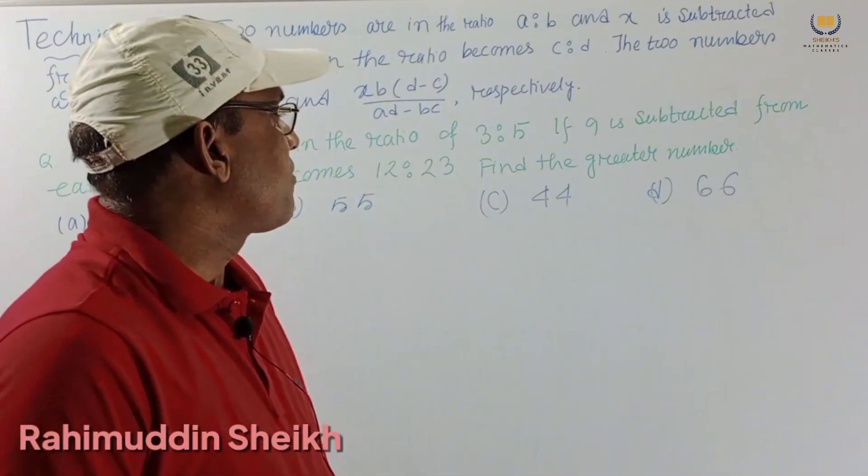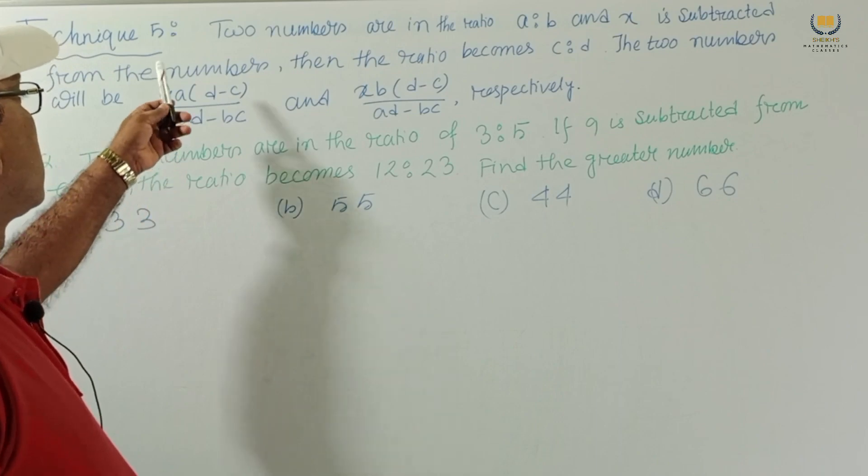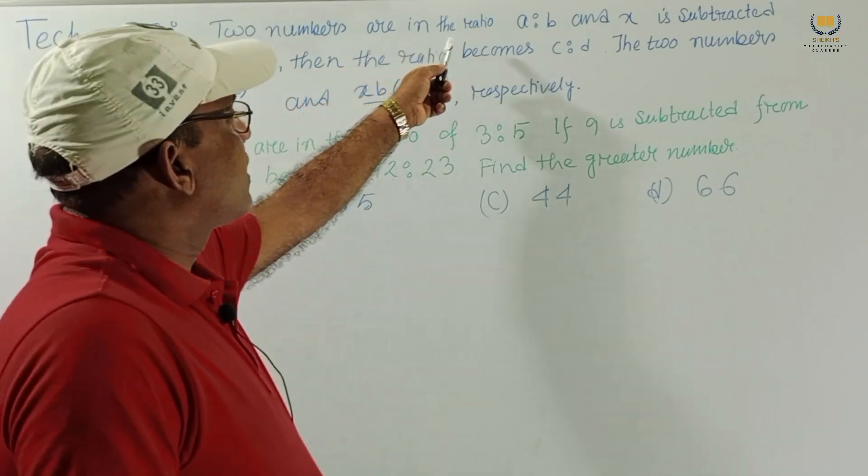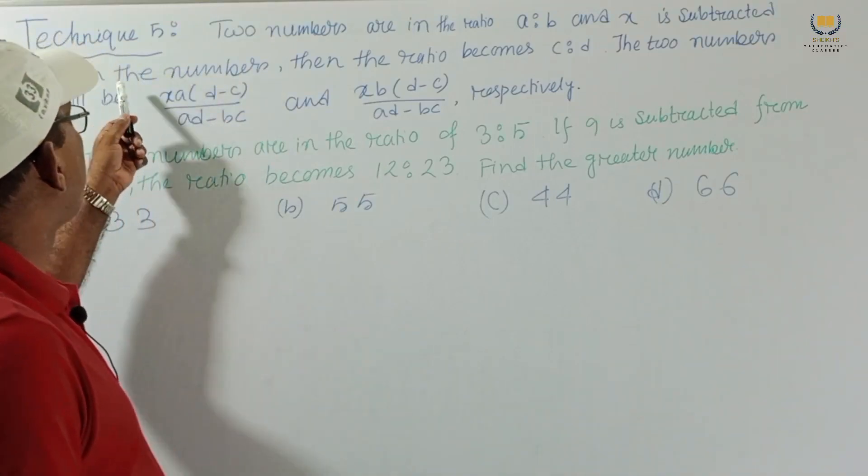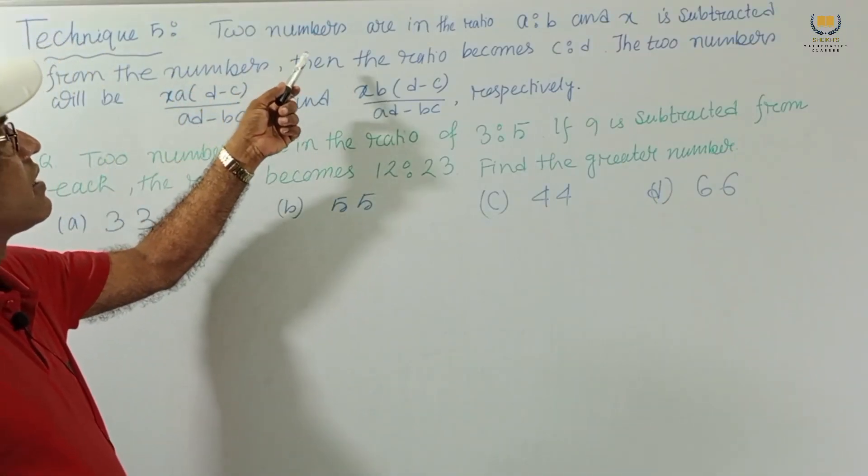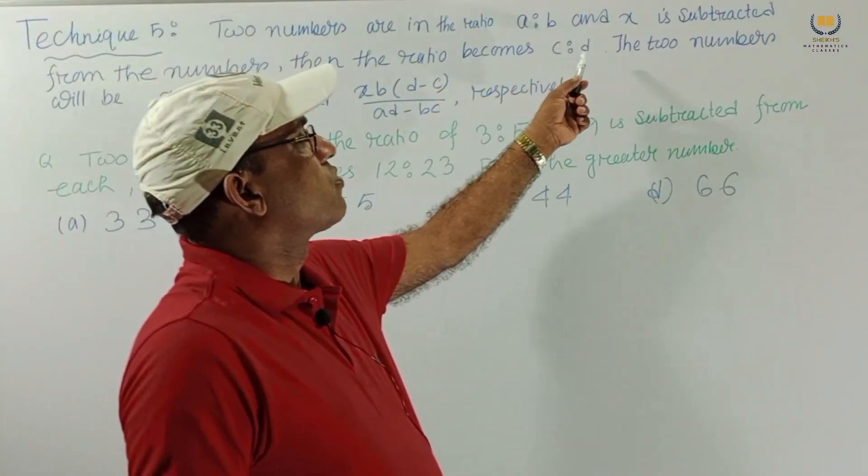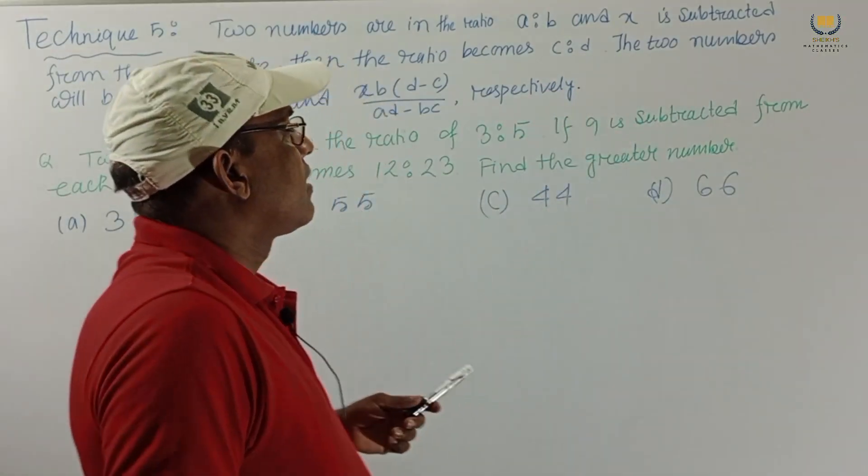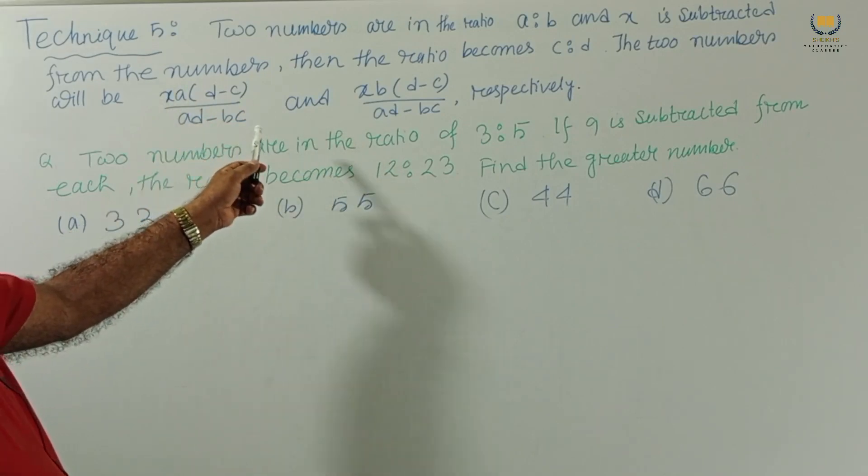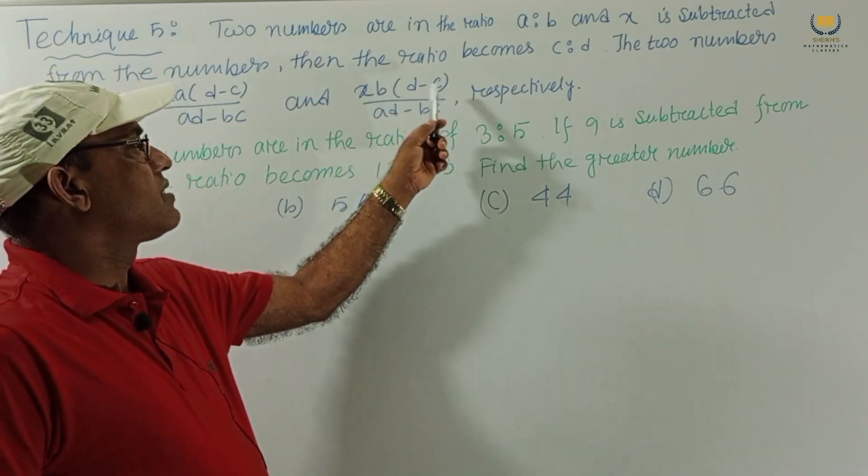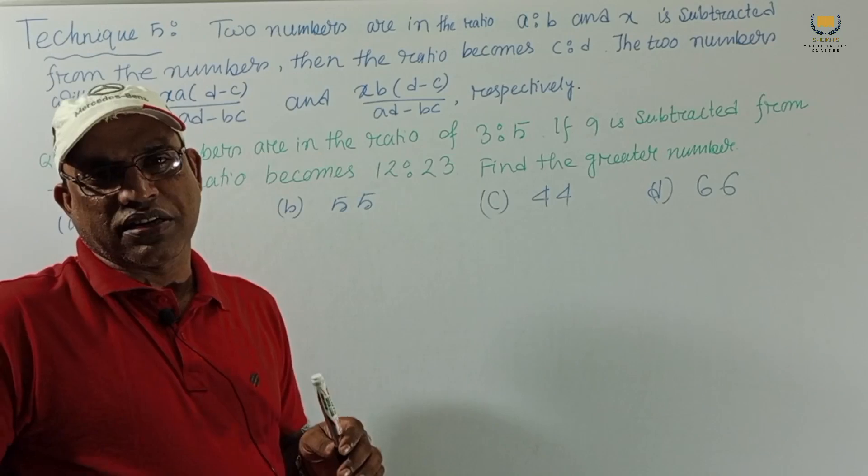Technique 5 is about ratio and proportion. Two numbers are in the ratio a to b and x is subtracted from the numbers. Then the ratio becomes c is to d. The two numbers will be x(ad-c)/(ad-bc) and x(bd-c)/(ad-bc) respectively. These are the numbers.